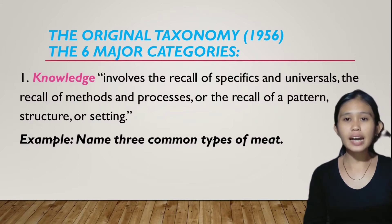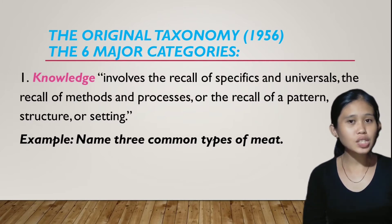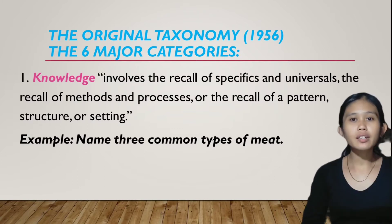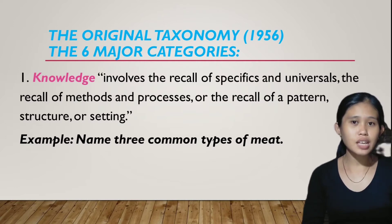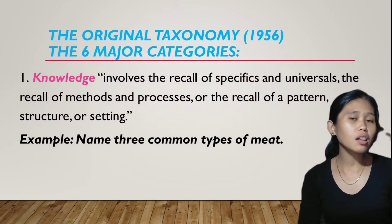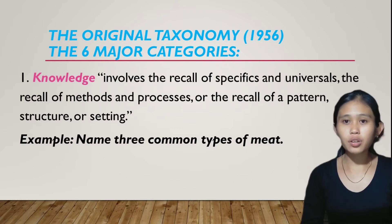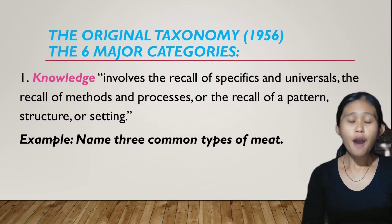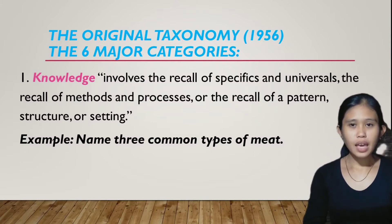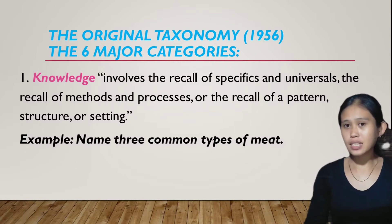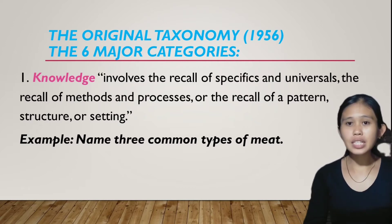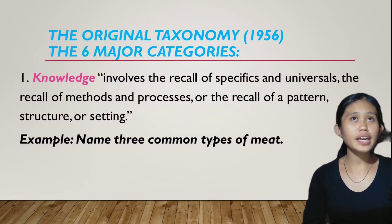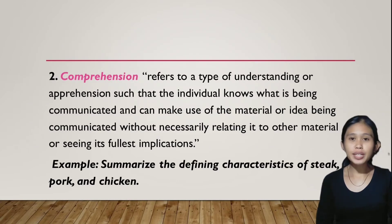The six major categories of the original taxonomy. Number one: knowledge. It involves the recall of specifics and universals, the recall of methods and processes, or the recall of a pattern, structure, or setting. For example, name three common types of meat. In simple words, knowledge is the ability of learners to recall data and information.